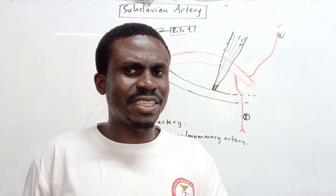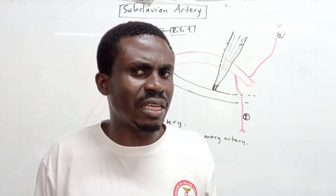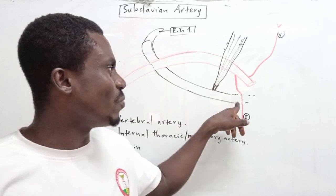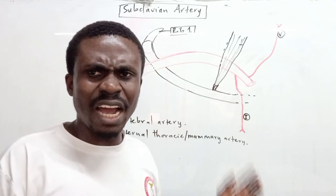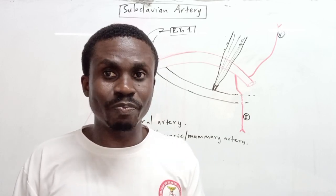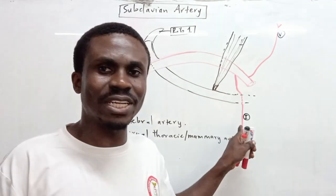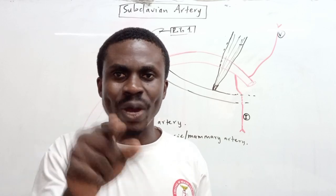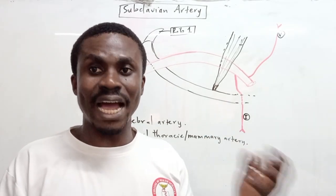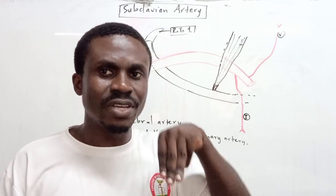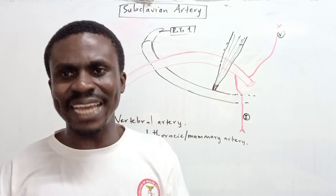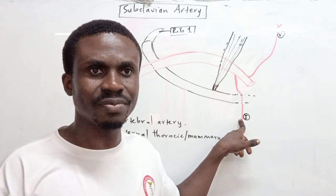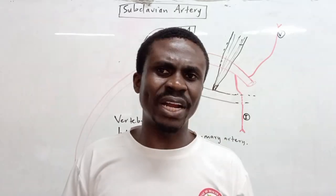There are nine anterior intercostal spaces. The first six anterior intercostal arteries come from the internal thoracic artery. The remaining three — the seventh, eighth, and ninth — come from the musculophrenic artery, which is itself a branch of the internal thoracic artery. So the musculophrenic artery gives the caudal three anterior intercostal arteries.